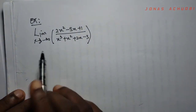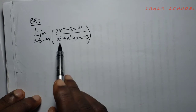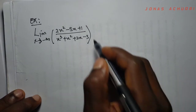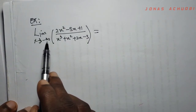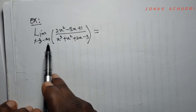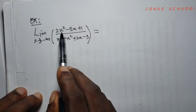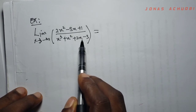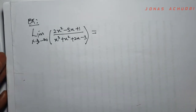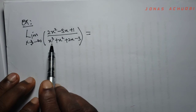We take a second example: the limit as x tends to negative infinity of (2x² − 3x + 1) / (x³ + x² + 2x − 3). Again our a is infinite, so the Case 1 method does not apply. We look for the highest power of x: the powers present are 2, 1, 3, 2, and 1, so the highest power is x³.